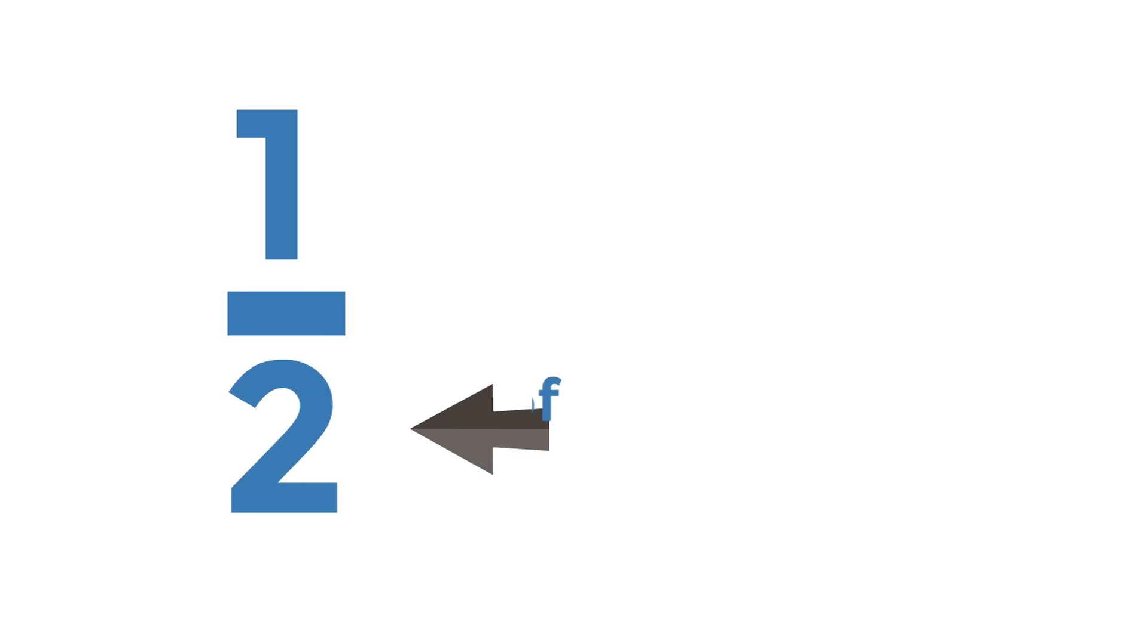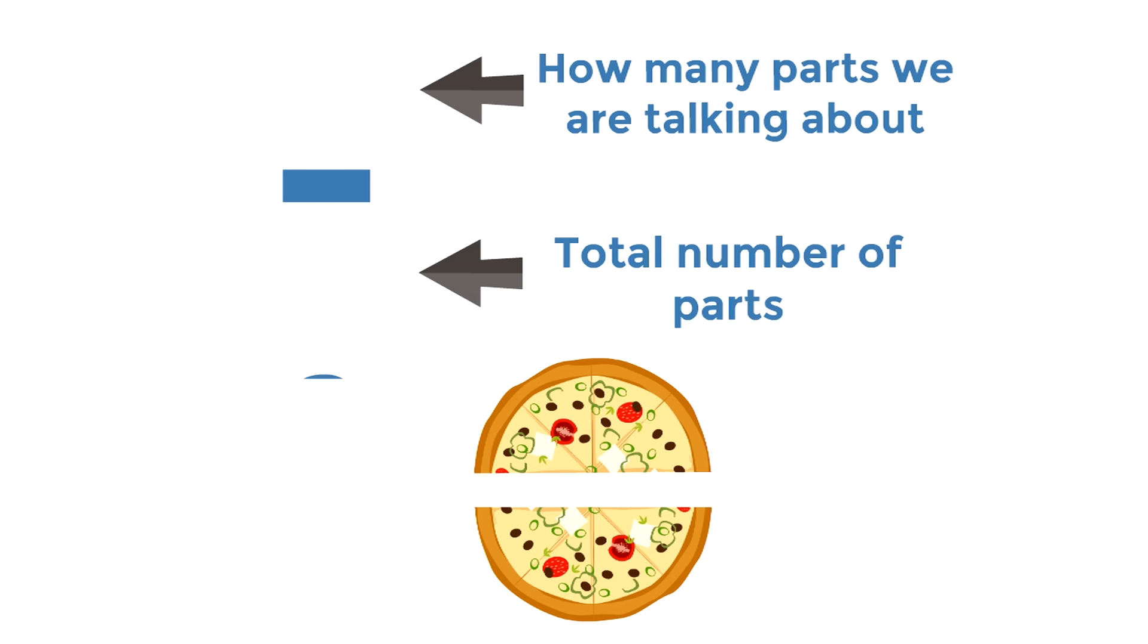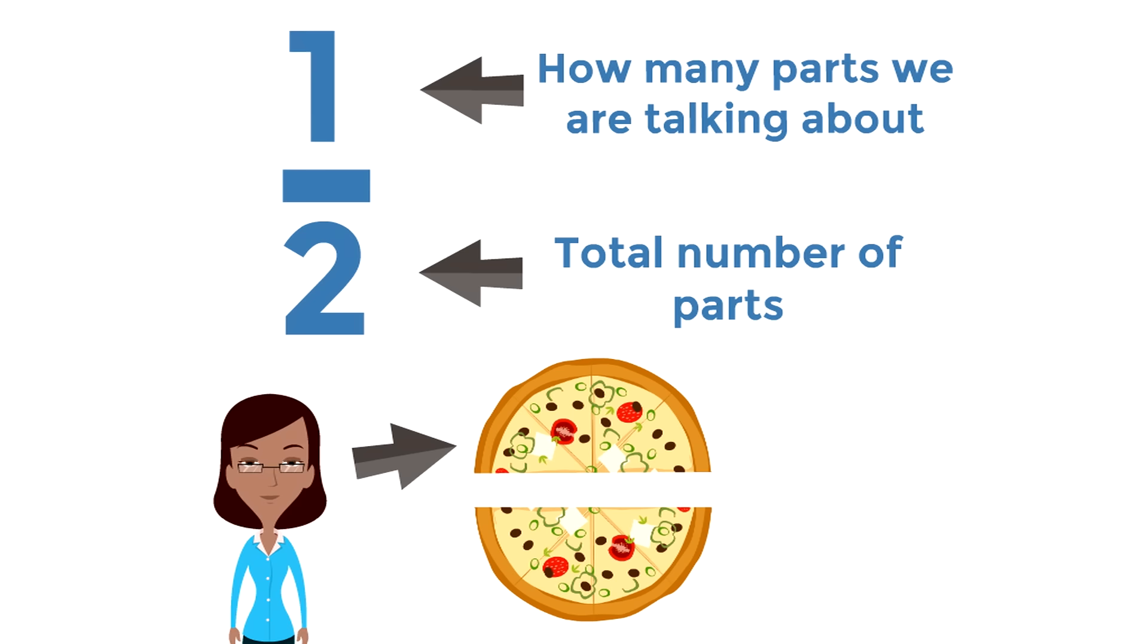Well, the bottom number shows the total number of parts. The top number shows how many parts we are talking about. Pretty simple. Let's go back to our example. There are a total of two parts to the pizza. So there's a two on the bottom. And Cindy just gets one part. That's the part we're talking about. So Cindy gets just one half of the pizza. She doesn't get the whole thing. She gets just one part. She gets one half.